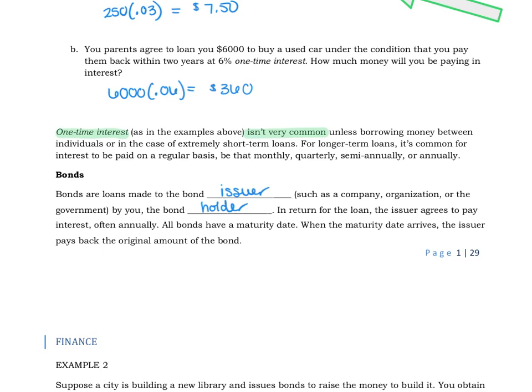And in return for that loan, the issuer—the company, the organization, or the government—agrees to pay you interest, typically on an annual basis. All bonds have a maturity date, and that means that as soon as that date arrives, the issuer pays you back the original amount of the bond, and you've already been paid that interest along the way.